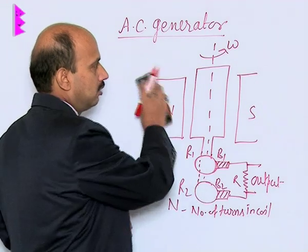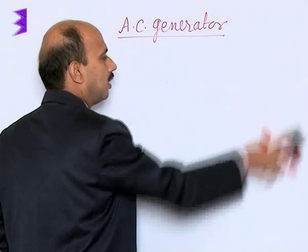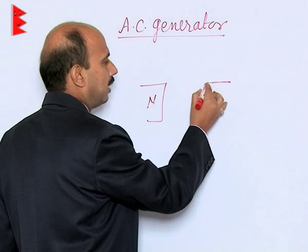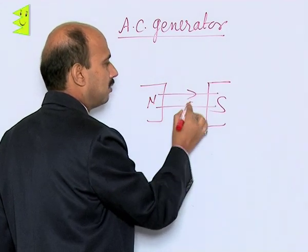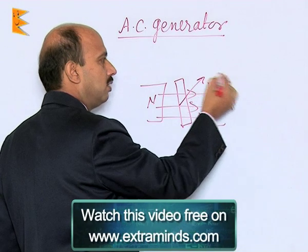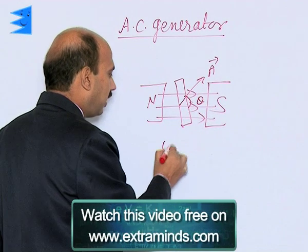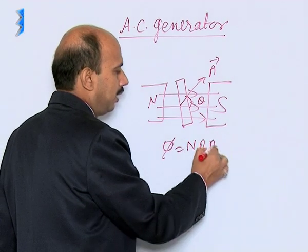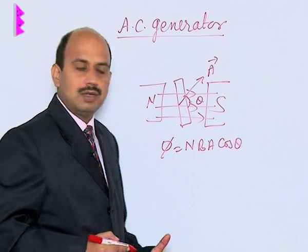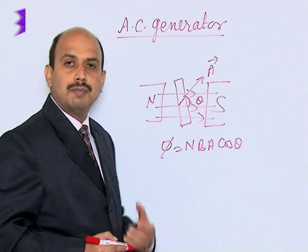Now let us see another diagram explaining the area vector and the magnetic field. Suppose the north pole is on one side and south pole on the other, and the magnetic field is horizontal. There is a coil whose area vector A makes an angle theta with the magnetic field. So flux at any time is given by Φ = NBA cosθ, where N is the number of turns, B is magnetic field, A is area, and θ is the angle between the area vector and the magnetic field.